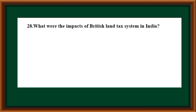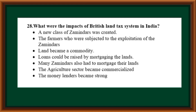What were the impacts of the British land tax system in India? A new class of zamindars was created; the peasants were subjected to exploitation by zamindars; land became a commodity; loans could be raised by mortgaging lands; many zamindars also had to mortgage their lands; the agriculture sector became commercialized; money lenders became strong.